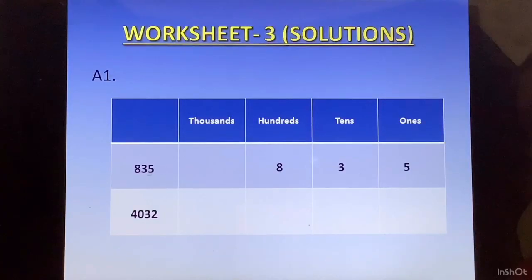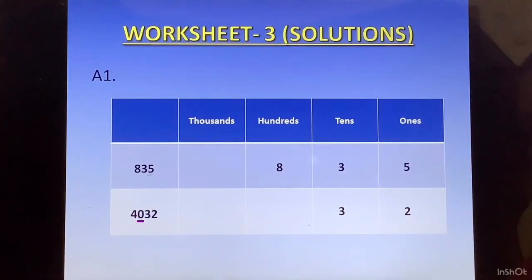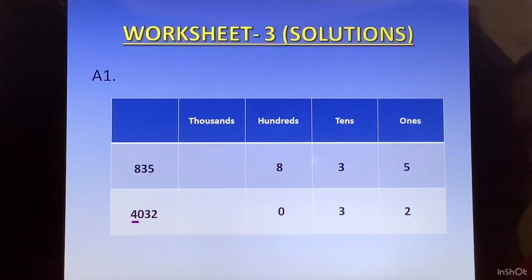For the next number, we again start with the rightmost digit, 2, which goes in the ones column. Then 3 goes in the tens column, 0 goes in the hundreds column, and 4 goes in the thousands column.